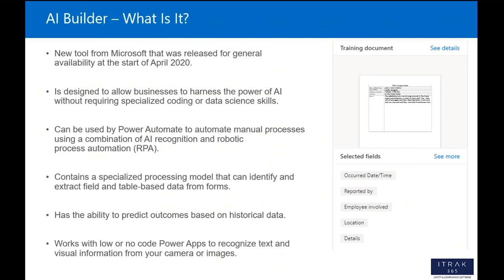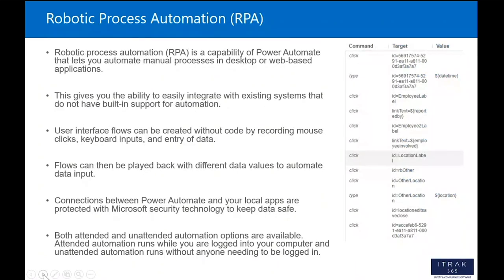AI Builder also has the ability to predict outcomes based on historical data. It works with low- or no-code Power Apps and is able to recognize text and visual information from your camera or pictures. A few other features include the ability to extract key talking points from text, detect the language being used in a block of text, and perform sentiment analysis — telling you the positive or negative sentiment of text that you feed into it.